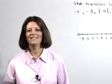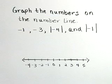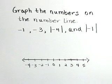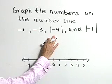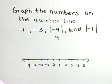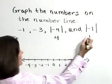Graph the numbers on the number line: negative 1, negative 3, the absolute value of negative 4, and the absolute value of negative 1. Let's first start by making a note that the absolute value of negative 4 is positive 4, and the absolute value of negative 1 is 1.